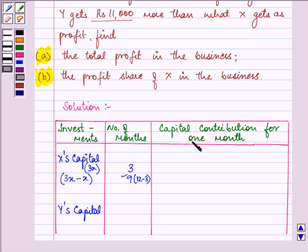So capital contribution for 1 month will be equal to 9X and this will be 2X. 2X into 9 will be 18X.